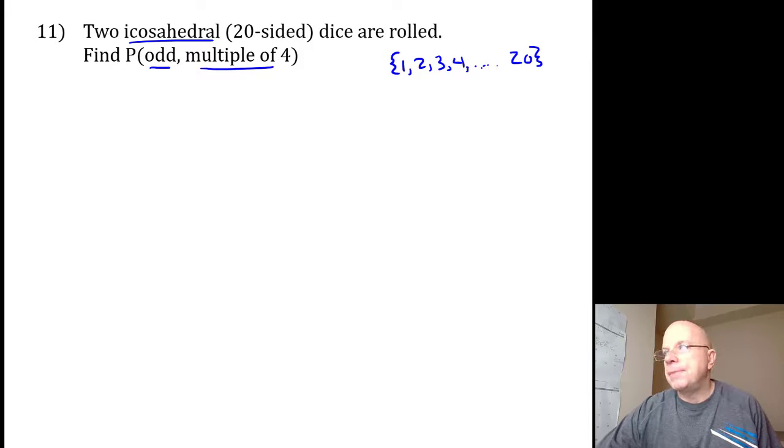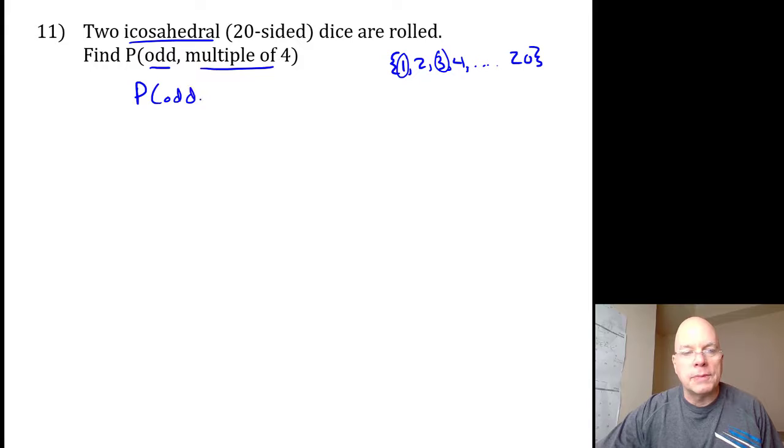The ones that are not multiples of two are every other number, and since there's an even number of numbers, it would be exactly one half. The probability of odd would be 10/20, a.k.a. one half. Probability of a multiple of four...